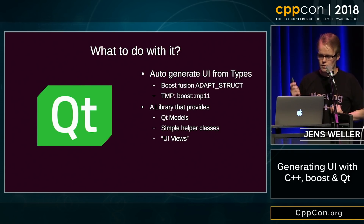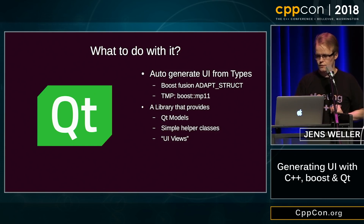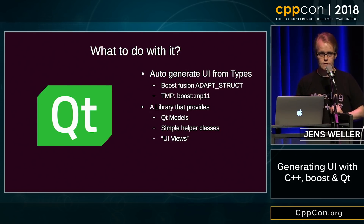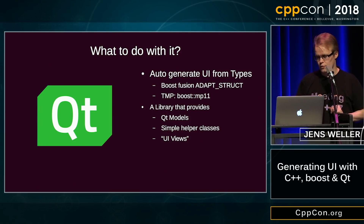My current idea is to auto-generate UI based on Boost Fusion AdaptStruct. I also used this to play around with Boost MP11, which was released this spring. I'm kind of working on a library which generically provides Qt models, simple helper classes, and UI views for types and nested types.